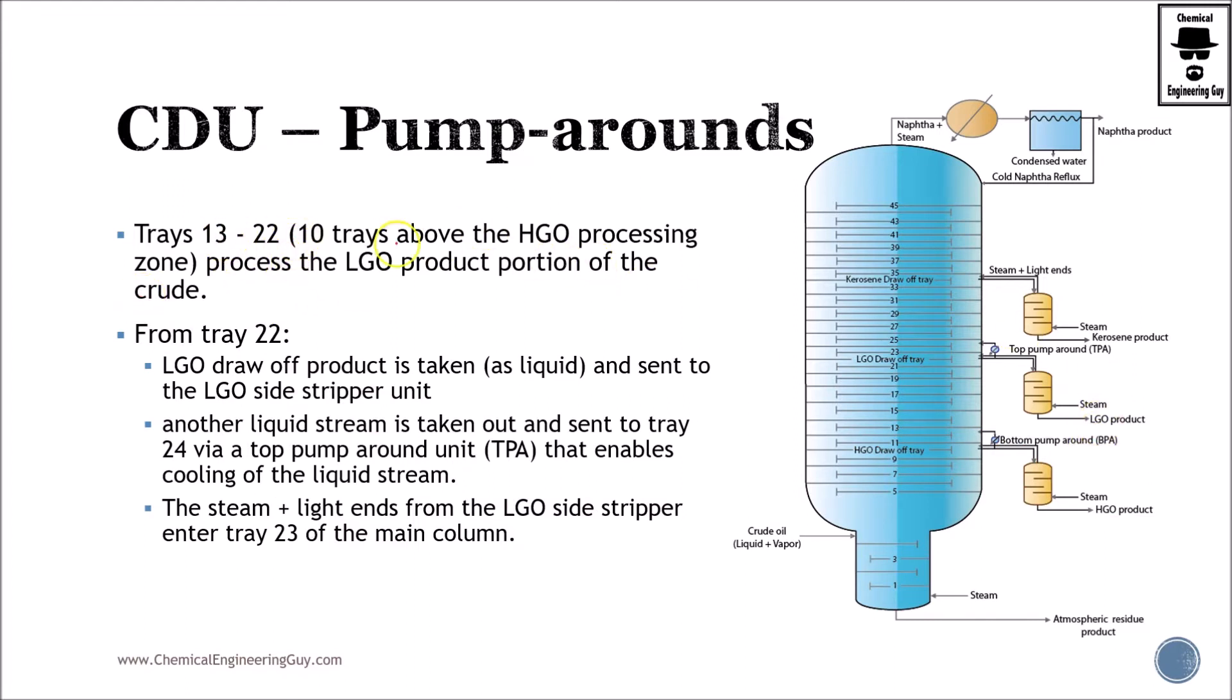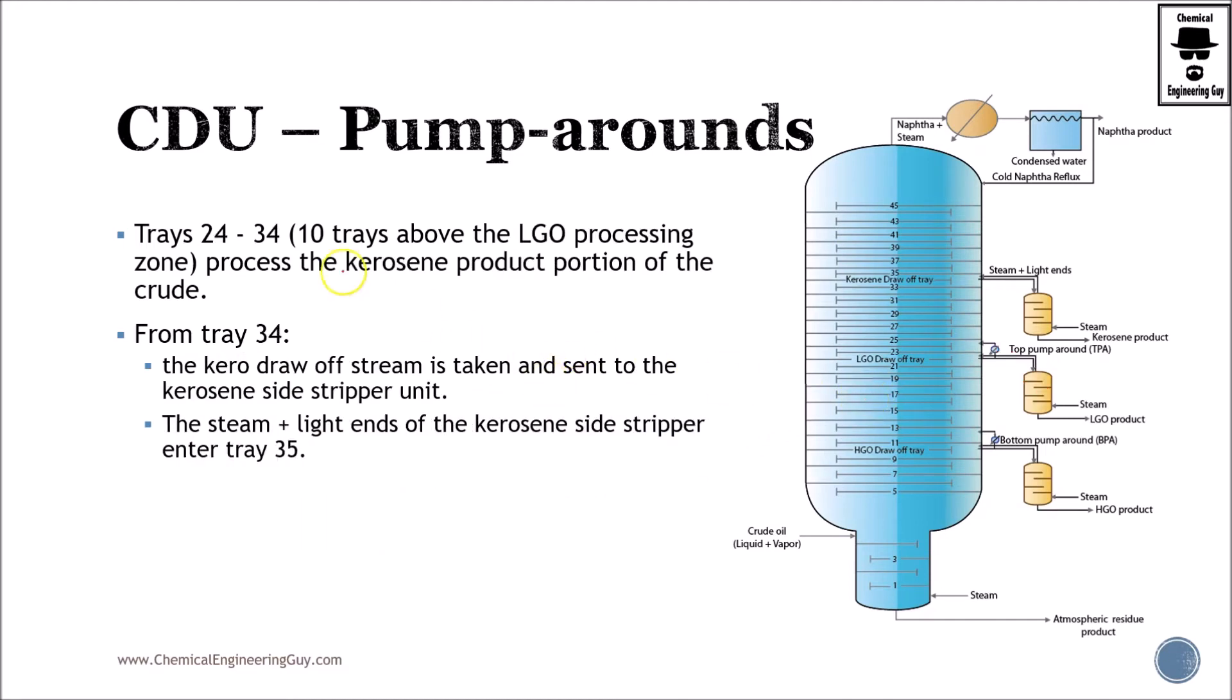The same is true for the following LGO. So 13 to 22, we're going to be processing LGO. These are 10 trays, 13 up to 22. This is LGO, essentially purification of LGO. From tray 22, we're going to remove this, bring it to this stripper. We have several trays, steam is going to purify, and then we get this back right here to tray 23A. This is exactly the same but different trays.